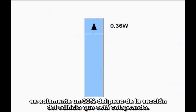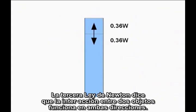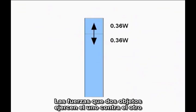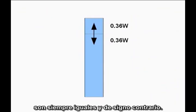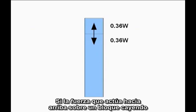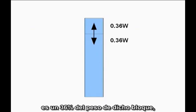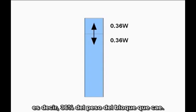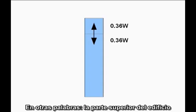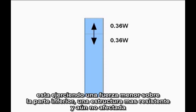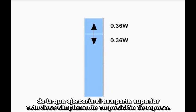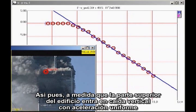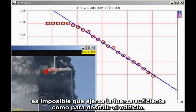But now turn it around. Newton's Third Law says interactions between objects work both ways — the forces two objects exert on each other are always equal and opposite. If the upward force acting on the falling block is 36 percent of the weight of the falling block, the downward force exerted by the falling block must be exactly the same: 36 percent of the weight of the falling block. In other words, the top section of the building is exerting less force on the lower, stronger, undamaged structure than it would if it were simply sitting motionless. Therefore, as long as the top section of the building is in uniform downward acceleration, it cannot possibly be providing sufficient force to destroy the building.